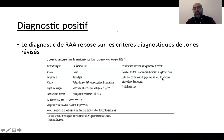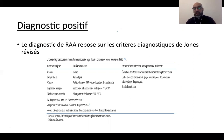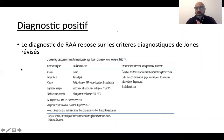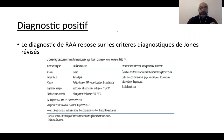Ce sont les valvulopathies qui vont venir secondairement et évoluer pour leur propre compte après une infection de RAA — vous les étudierez une à une lors des prochains cours. En cardiologie, ce qui nous intéresse surtout, c'est l'adulte et ces valvulopathies.